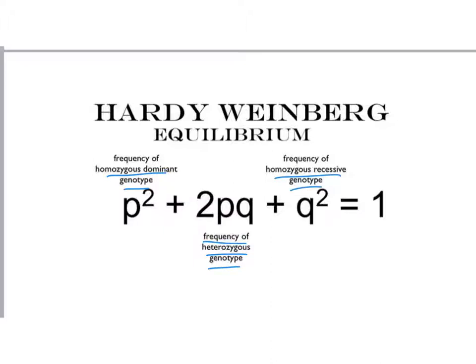That is how we arrive at the Hardy-Weinberg equation: P squared is the frequency of the homozygous dominant genotype, 2PQ is the frequency of the heterozygous genotype, and Q squared is the frequency of the homozygous recessive genotype. Knowing how to use this equation allows us to figure out genotypes, phenotypes, and make predictions about populations and the forces shaping allele frequencies.